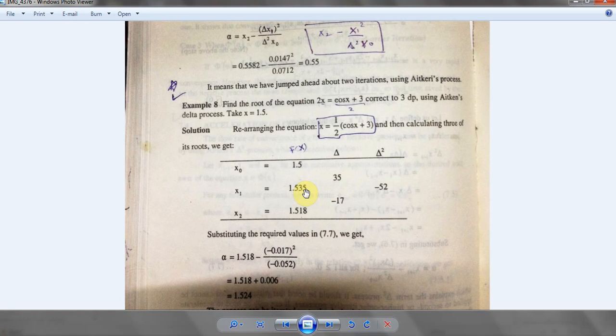So it will be our x1, and we're gonna repeat the process by putting 1.535 x1 into the equation again to get x2, which is 1.518. So now we're gonna just make a difference table.